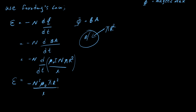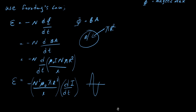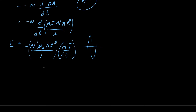Simplifying, we get EMF = −(μ₀N²πR²/L)·dI/dt. All of the terms outside the derivative are constants. Only I changes over time, because current changes over time — that's why the coil changes its magnetic field, and that's why we calculate self-inductance. The constant part of the equation is the self-inductance, which we call L. So, L = N²μ₀πR²/L. This is the self-inductance.